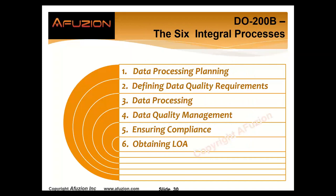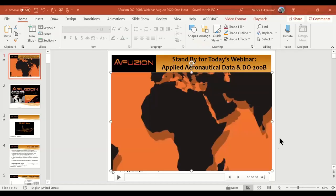DO-200B has six key embedded or integral processes. Number one: planning for data processing. Number two: defining data quality requirements. Number three: the actual data processing itself. Number four: data quality management. Number five: how you assure compliance. And number six — especially for civil — you need that EASA/FAA certification authority LOA, letter of acceptance.